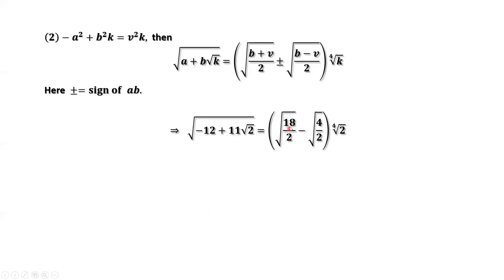Continue to simplify. This is square root of 9, this is square root of 2. Square root of 9 is 3. Continue to simplify this part, we have the final answer, which is 3 times the fourth root of 2 minus the fourth root of 8. This is the final answer.